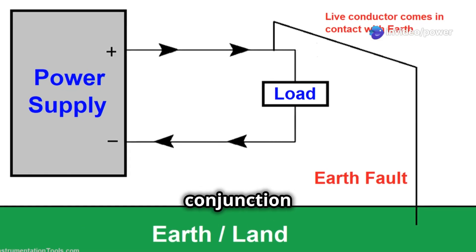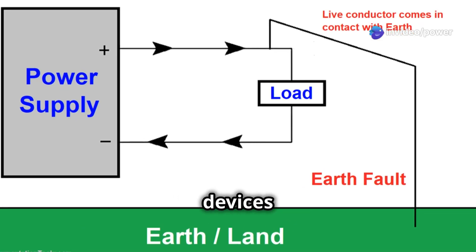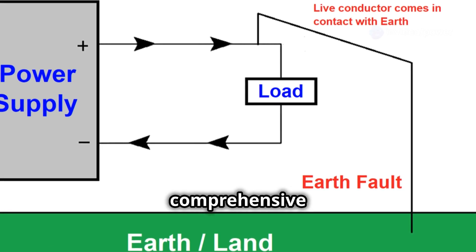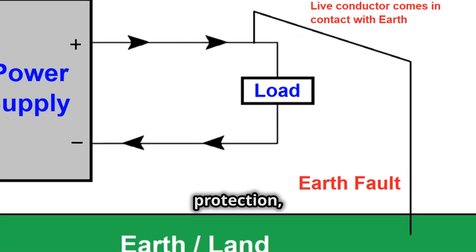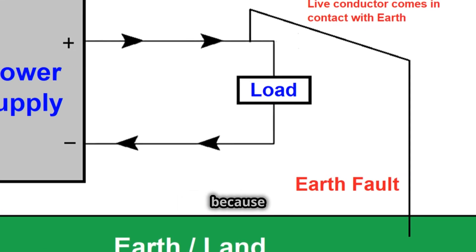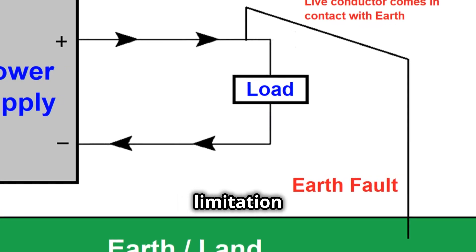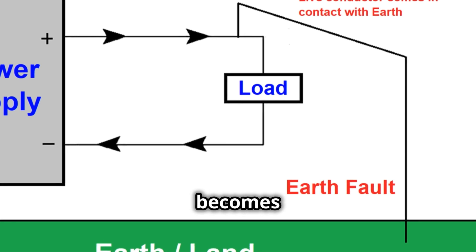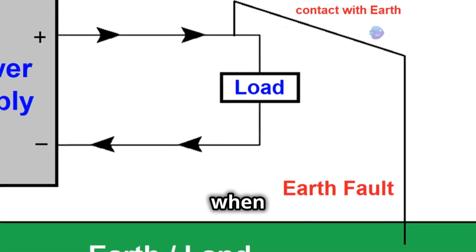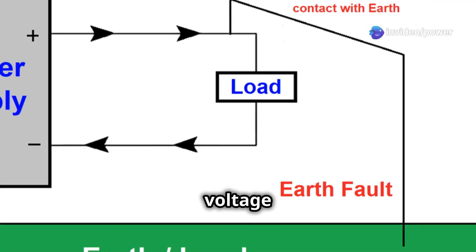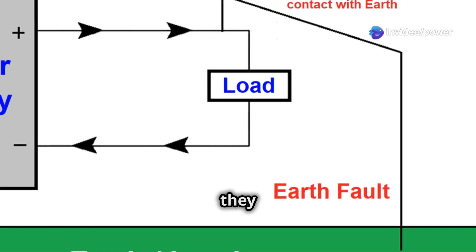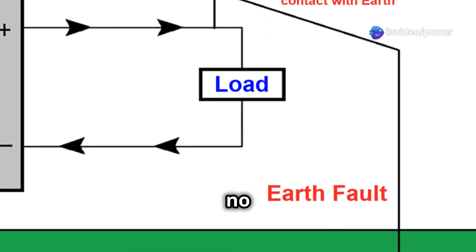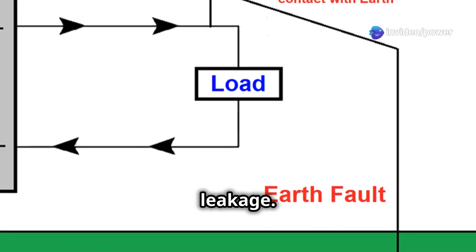However, it's important to remember that RCCBs don't provide protection against overload or short circuits. They're often used in conjunction with other devices like MCBs or fuses for comprehensive electrical protection. It's also worth noting the limitation of ELCBs: they rely on detecting voltage on the earth wire, meaning they won't detect a fault if there is no earth connection.